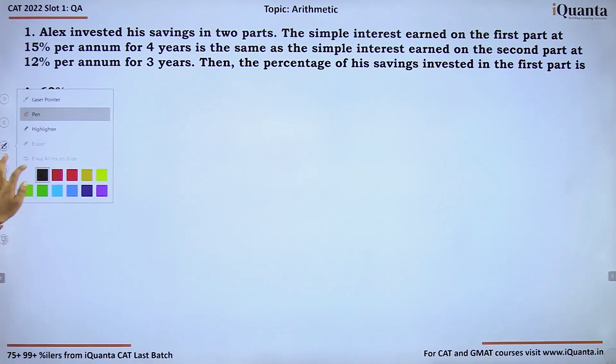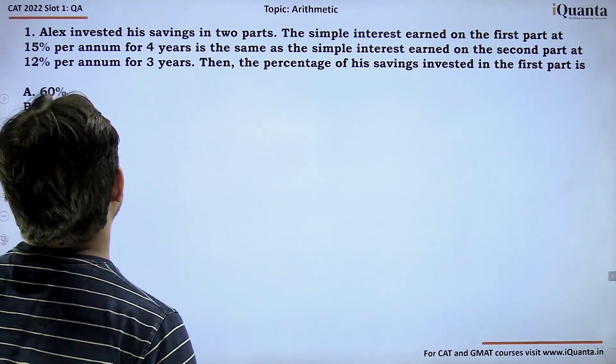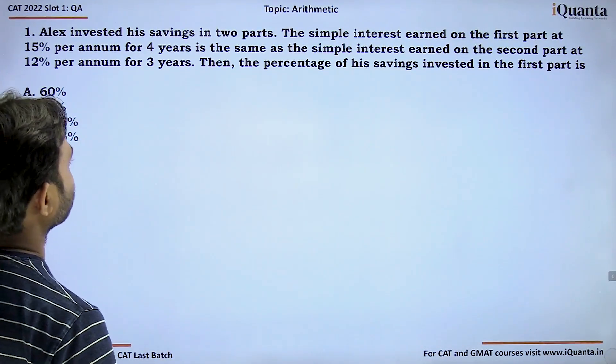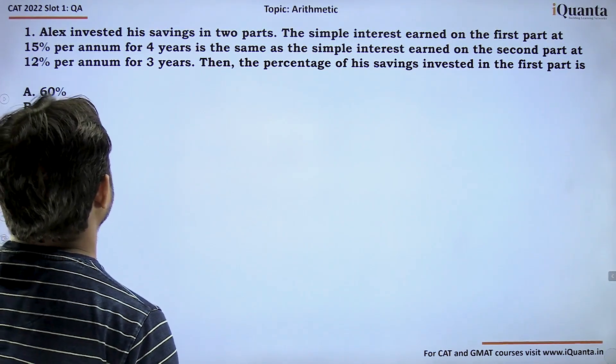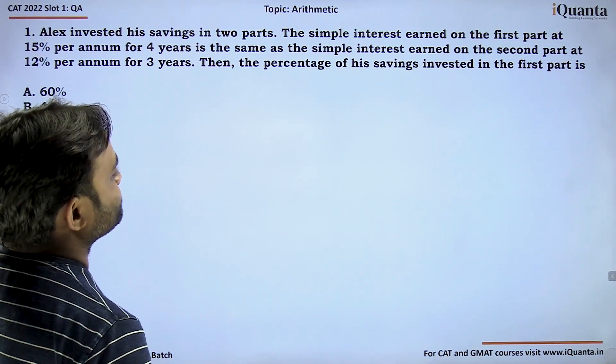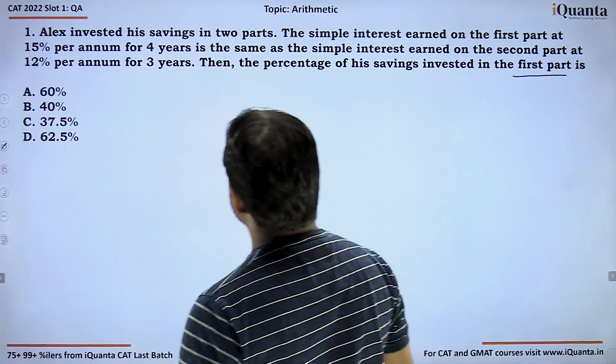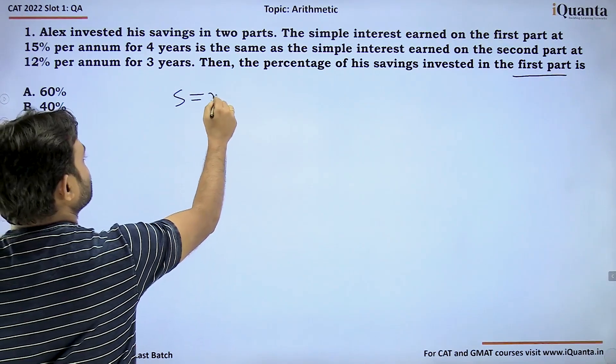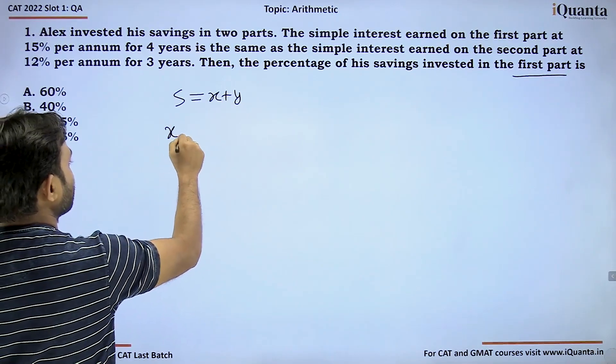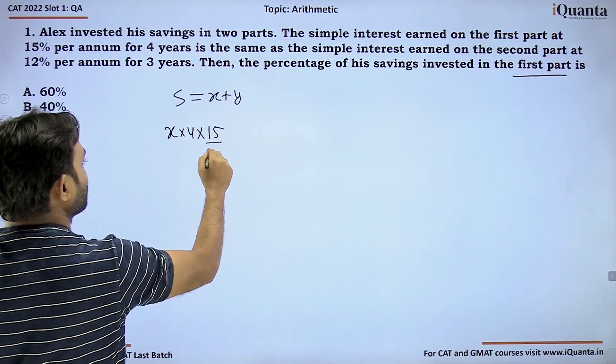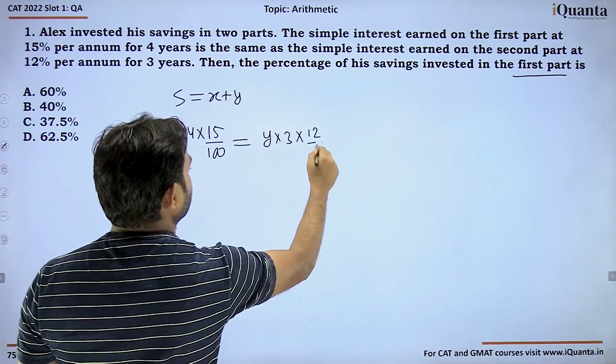First question is based on simple interest. It says Alex invested his savings into two parts. The simple interest earned on the first part at 15% per annum for four years is same as the simple interest earned on the second part at 12% per annum for three years.